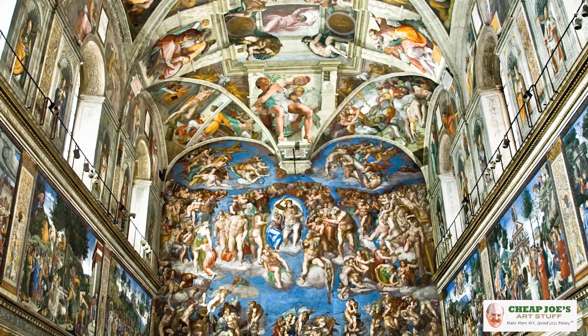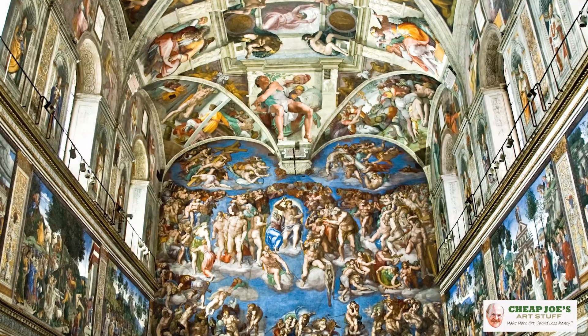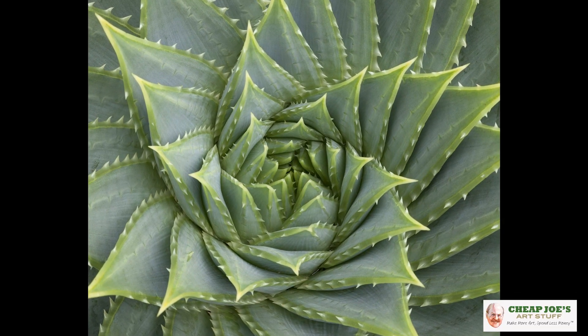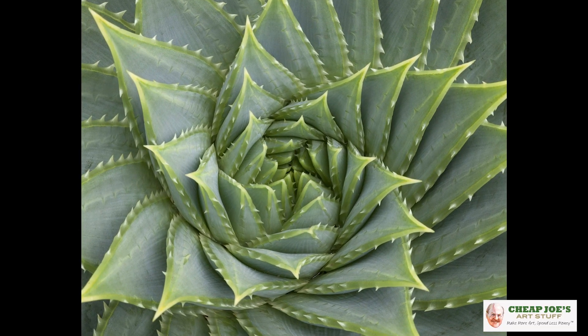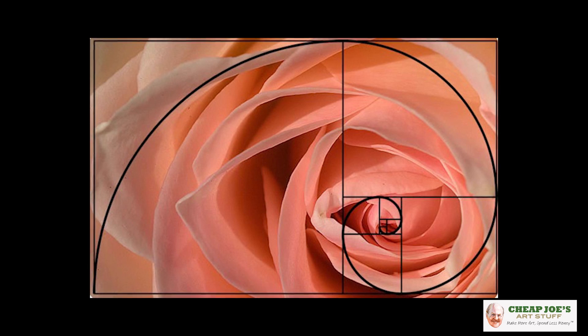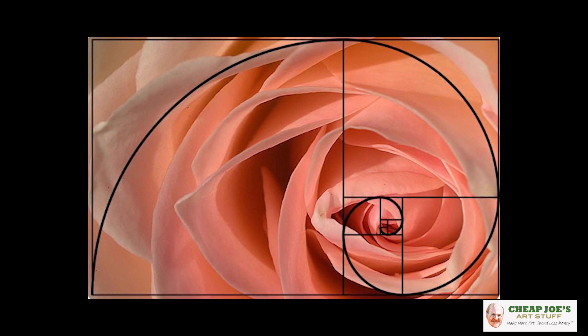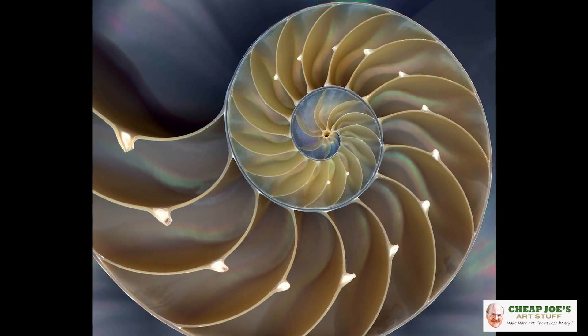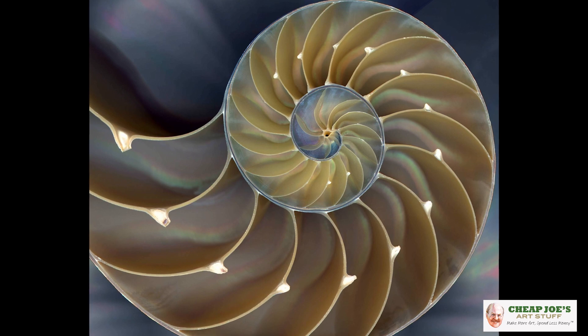There are solid examples of how this applies in art and architecture, but you also see it in natural forms as well — plants, flowers, and different forms of animal life have this basic mathematical structure applied in how those things are put together.